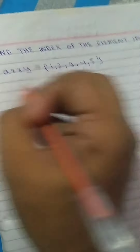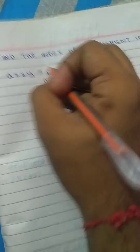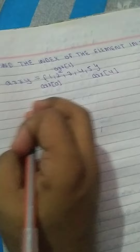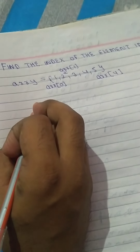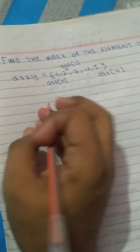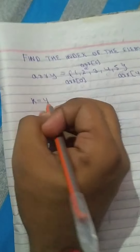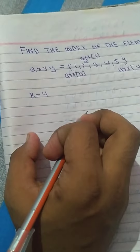You are given an array like this: one, two, three, four, and five. As you know, this is index number 0, this is index number 1, and the element at index number 4. Firstly, you have to take input from the user for what index you want to search. Let's assume k is equal to 4 — that is the index number we have to search.